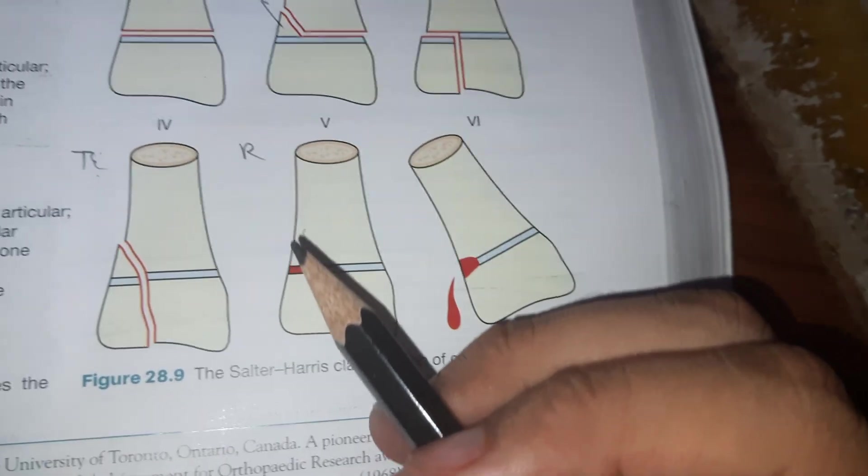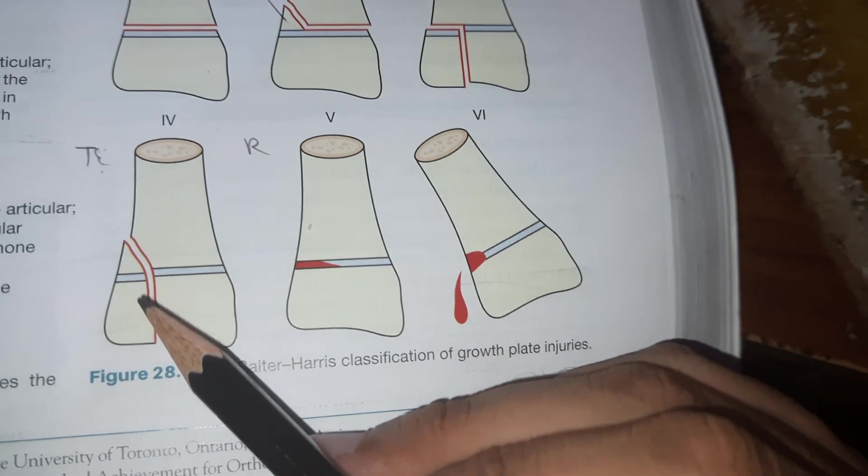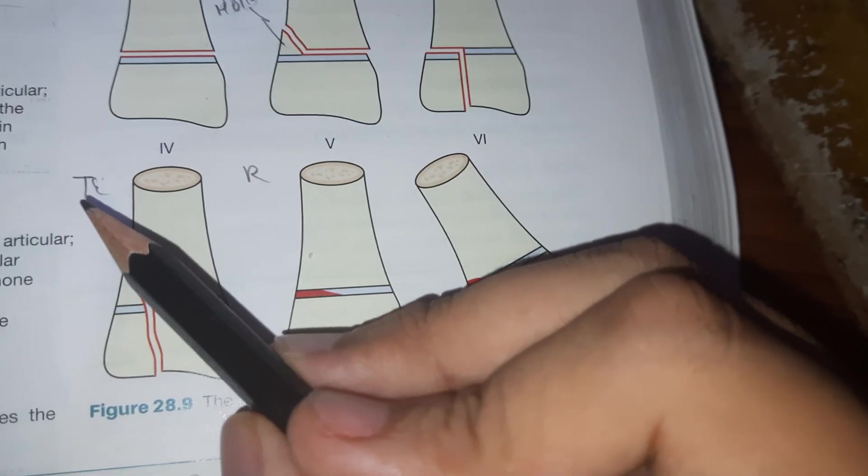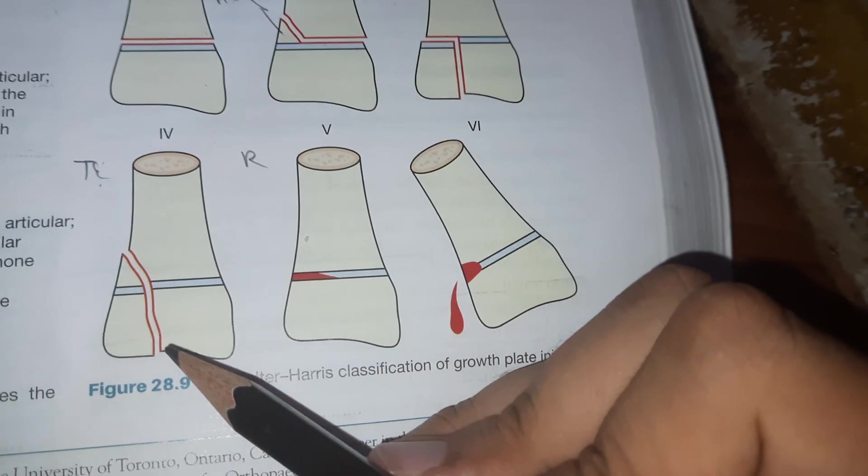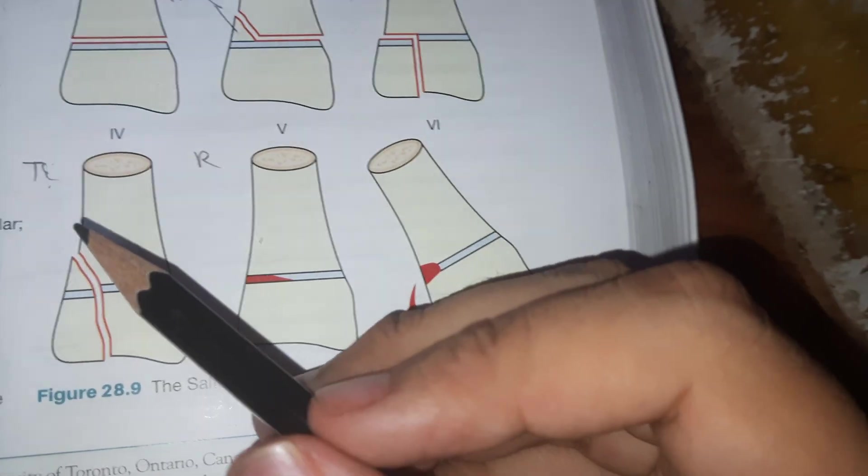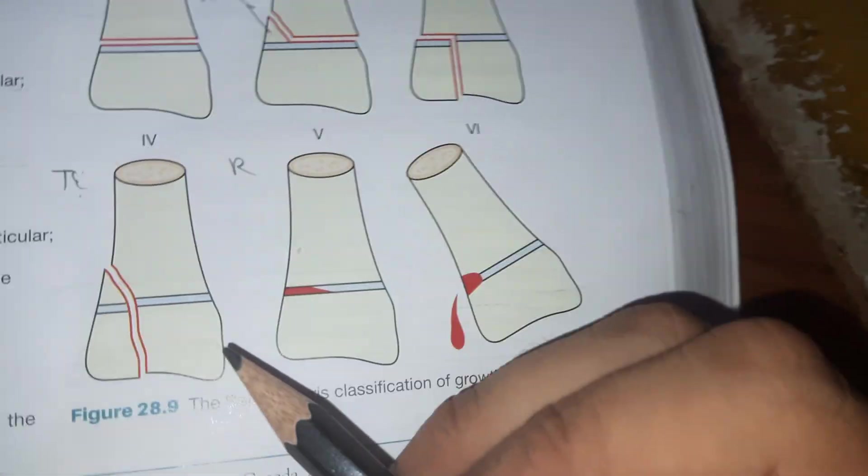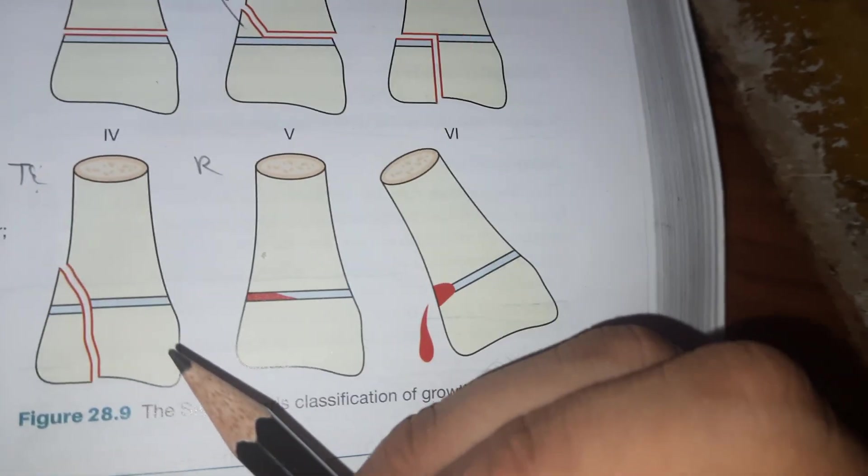In fourth type, Type 4, the fracture line crosses the epiphysis, physis, as well as metaphysis. It involves everything. T means through everything: metaphysis, physis, and epiphysis. This type is seen in lateral condylar fracture of humerus in children.